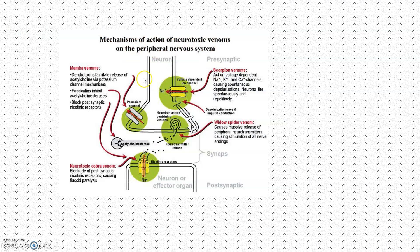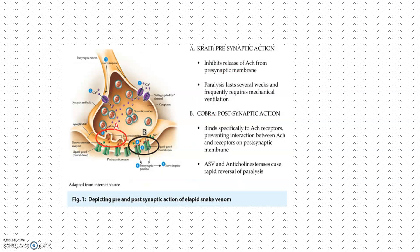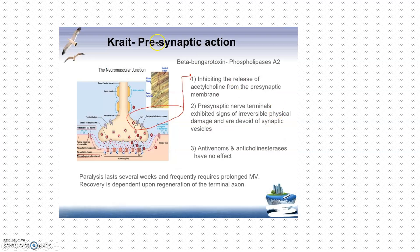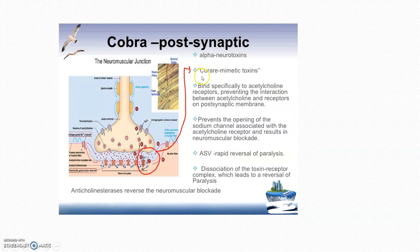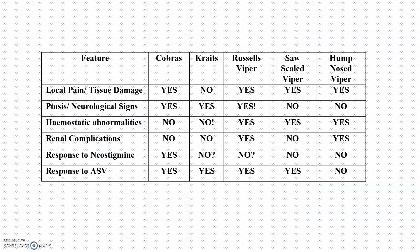The mechanism of action of neurotoxins involves destroying neurons, binding to proteins, and inhibiting neuronal function. The krait has pre-synaptic action via beta-bungarotoxin and phospholipase A2, inhibiting the release of acetylcholine from pre-synaptic membranes. The cobra has post-synaptic action, binding through curare-mimetic toxins and alpha-neurotoxins, preventing the opening of the sodium channel associated with acetylcholine. Local pain and tissue damage are rare in krait and cobra bites.